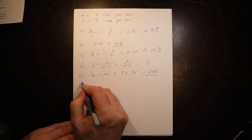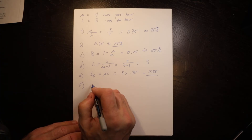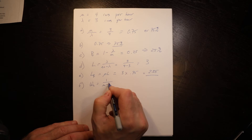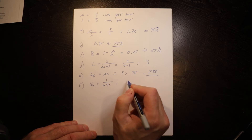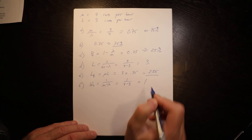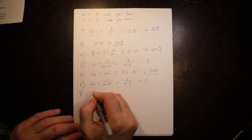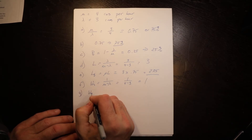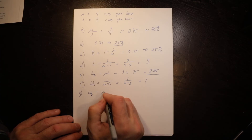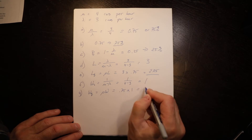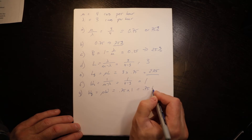Part (f): time in the system W equals one over (mu minus lambda), which is one over (four minus three), equals one hour. Part (g): Wq equals rho times W, which is 0.75 times one, equals 0.75 hours.